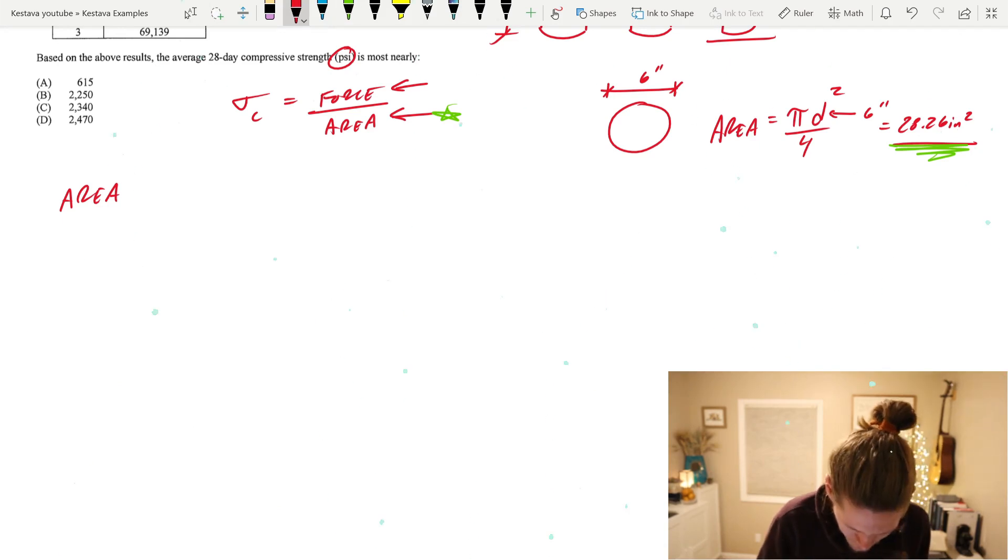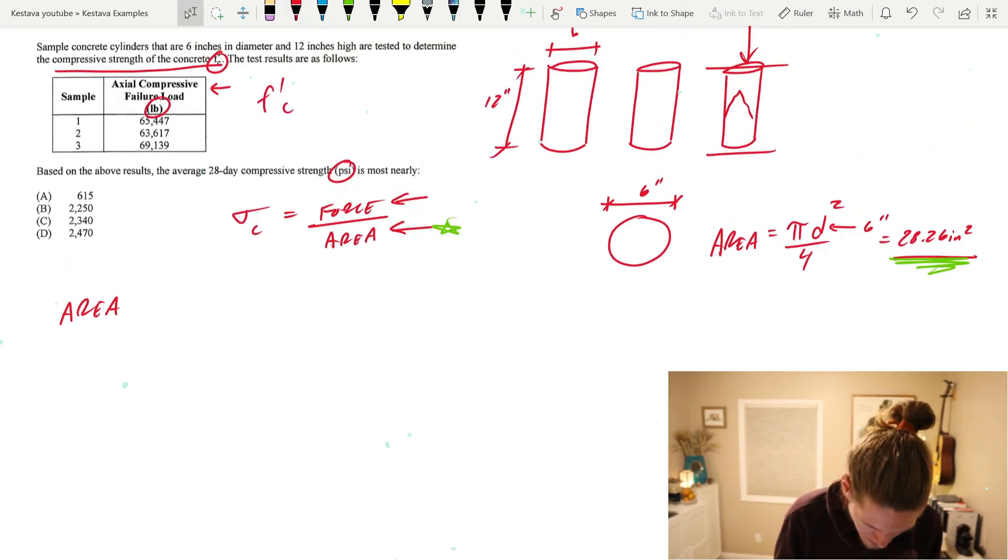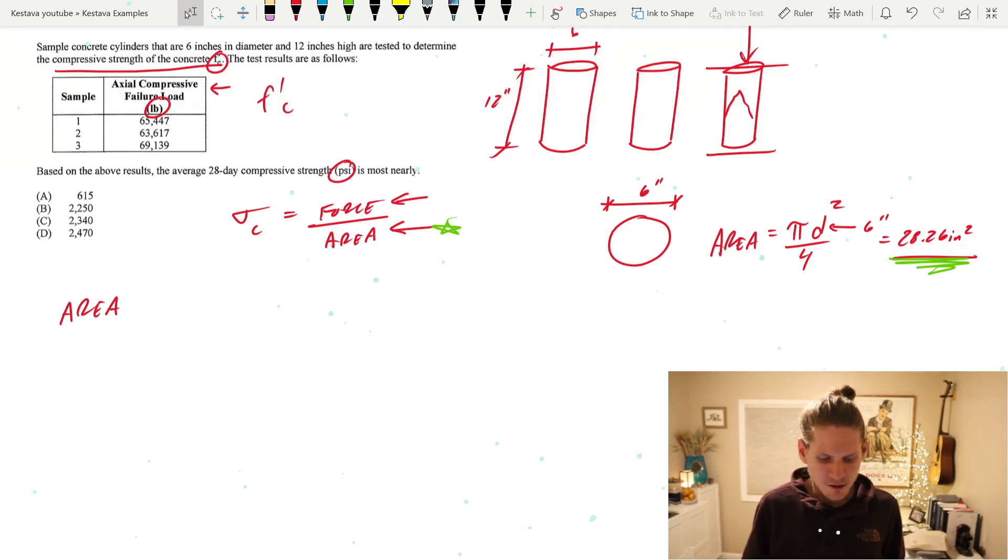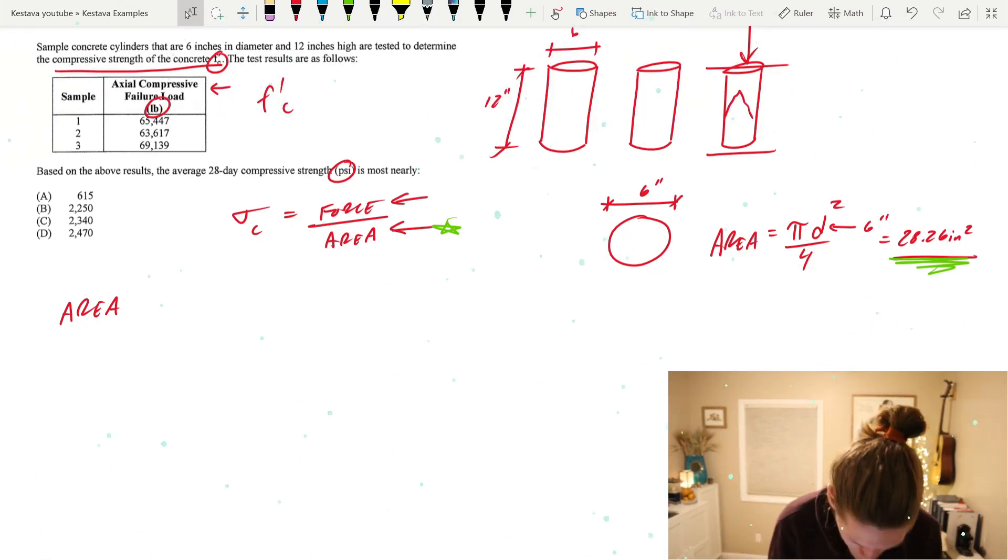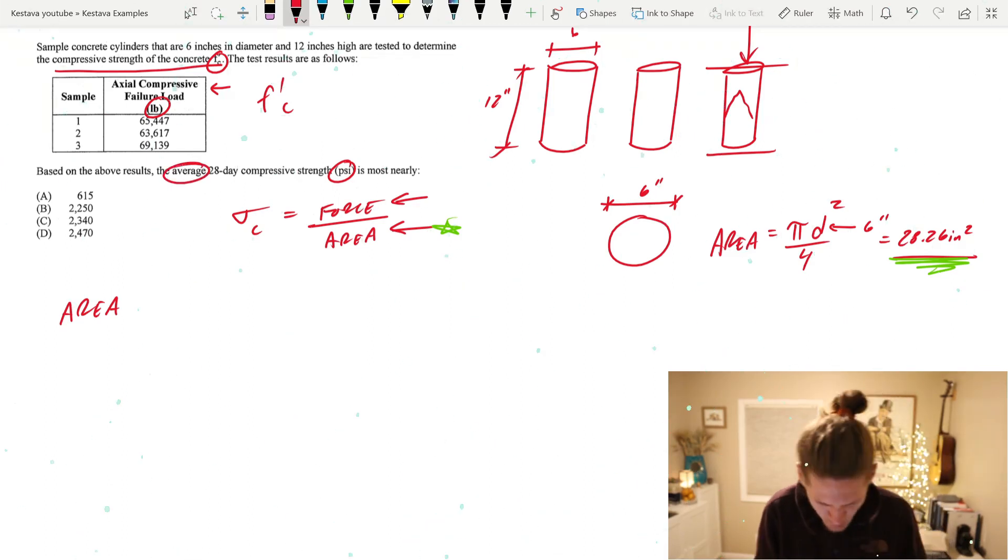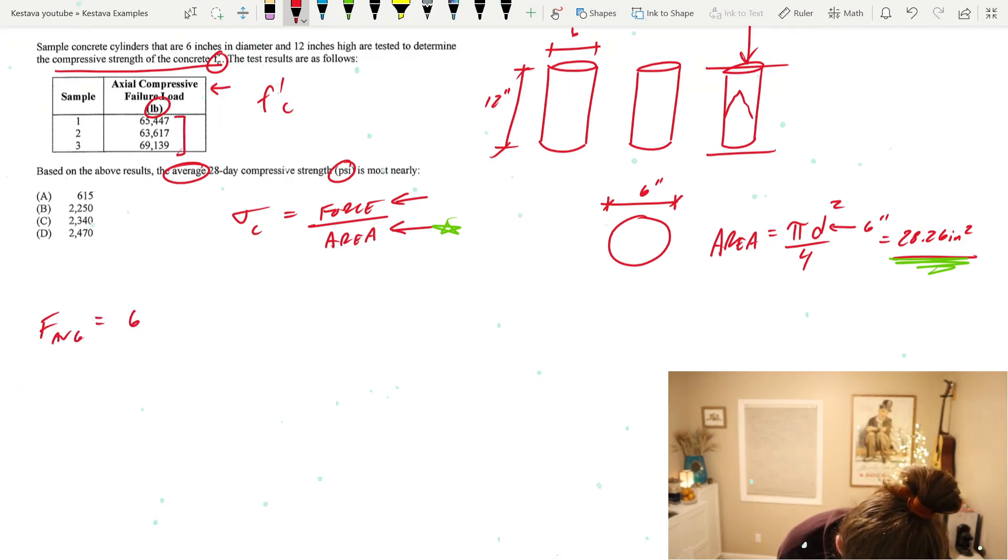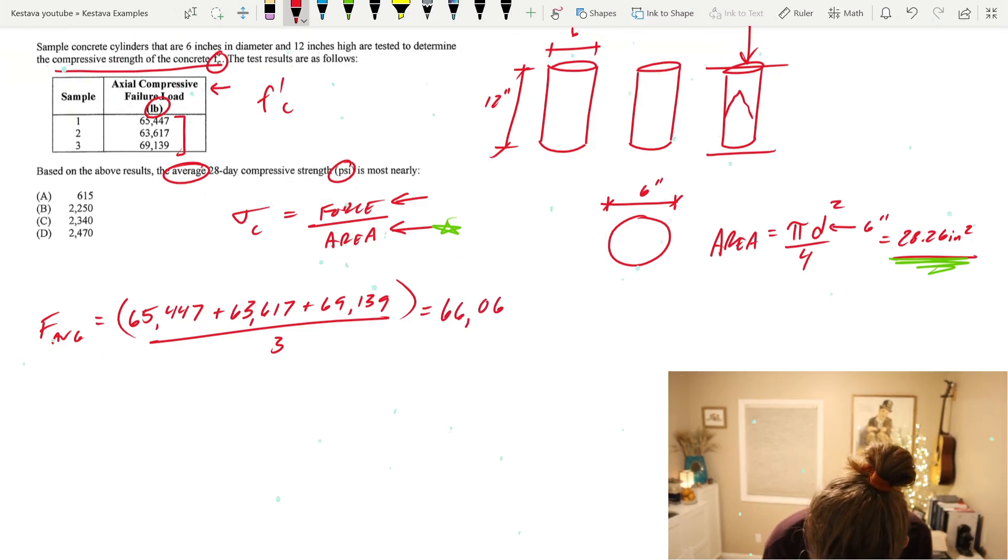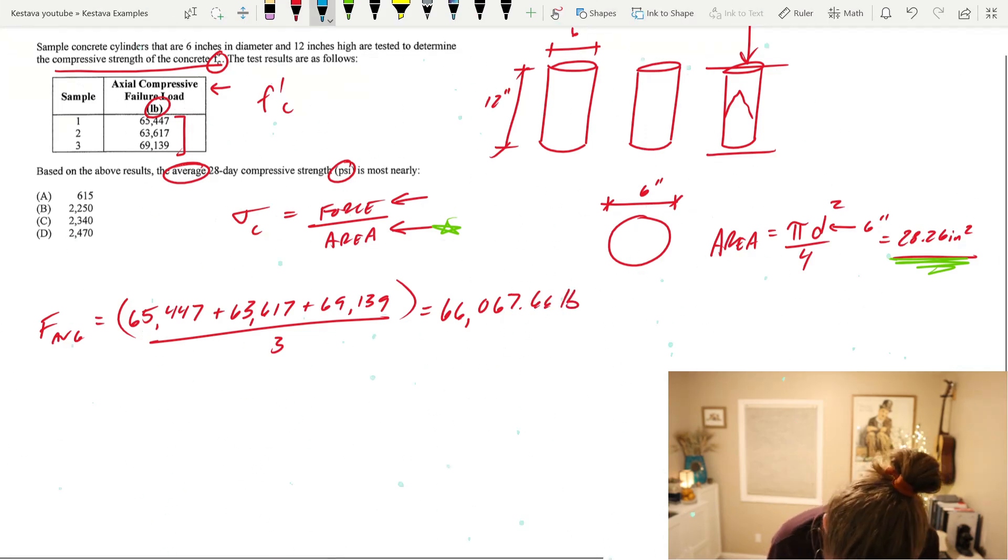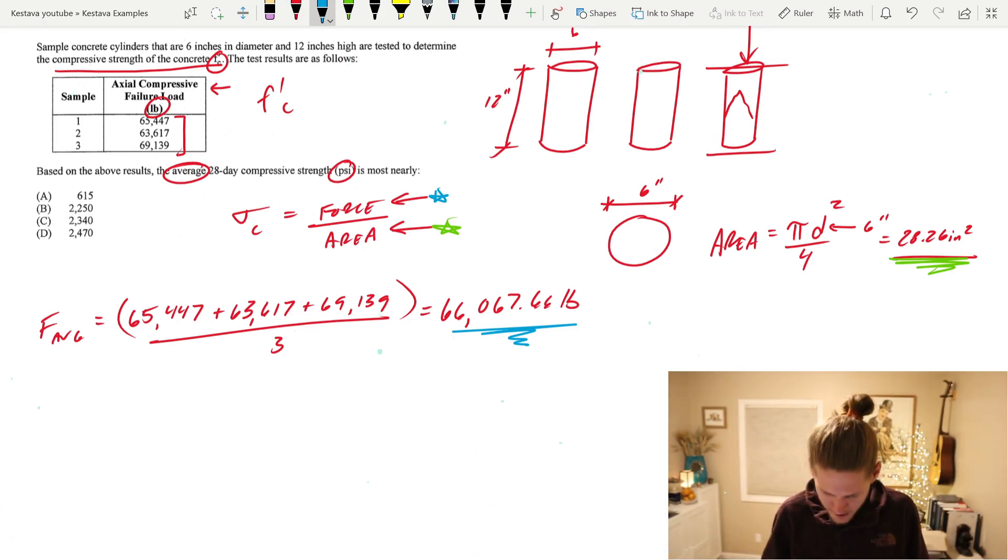Now let's find force. If we scroll back up here, our three samples gave an axial compressive failure in pounds, so that's a force. But we need to find the average 28-day compressive strength, so we want to take the average of these three samples above. Force average equals 66,067.66 pounds. That's our average force from our samples.